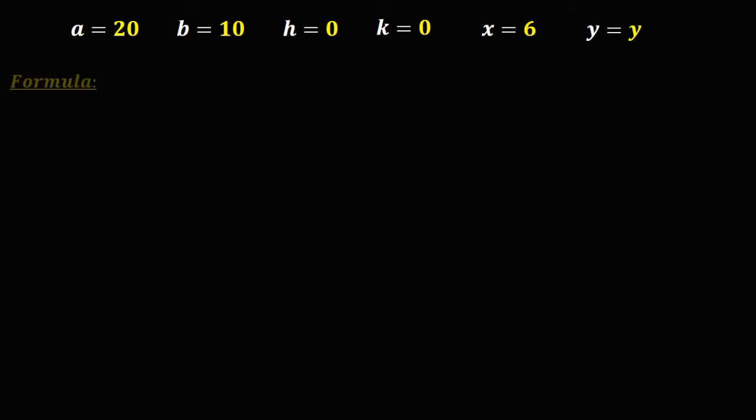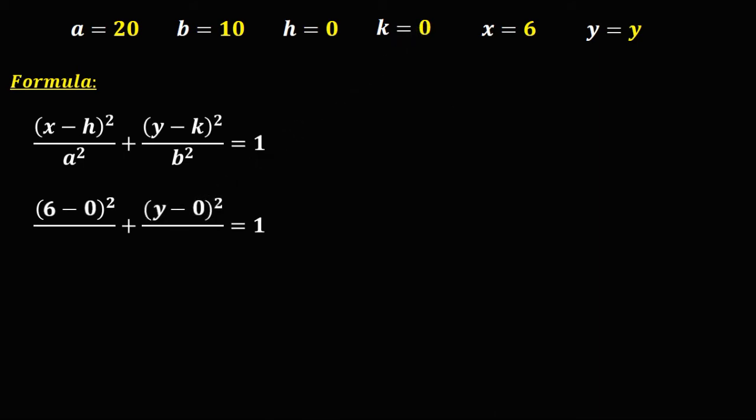So we have x is 6 minus h is 0, squared, then y minus k (k is 0), then we have a squared or 20 squared, and also b squared, that's 10 squared, then simplify. So 6 squared, that's 36, 20 squared, that's 400.